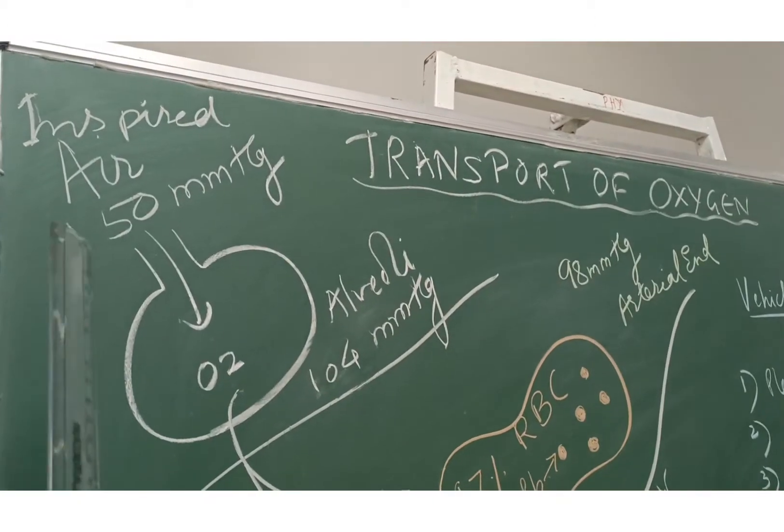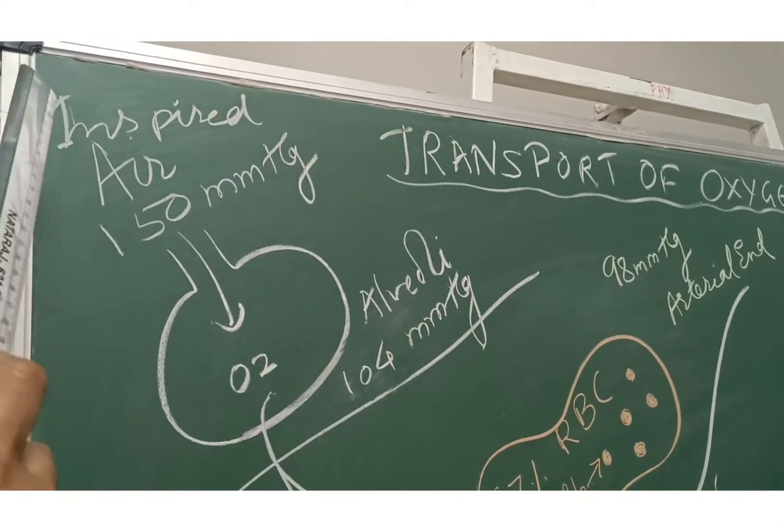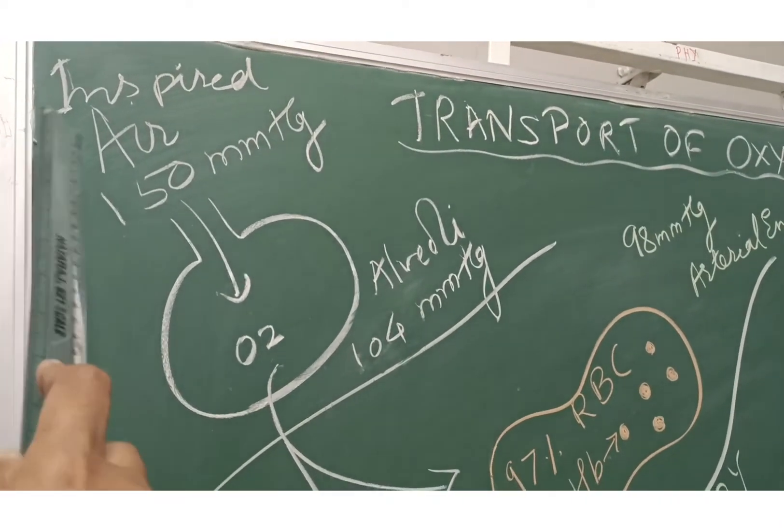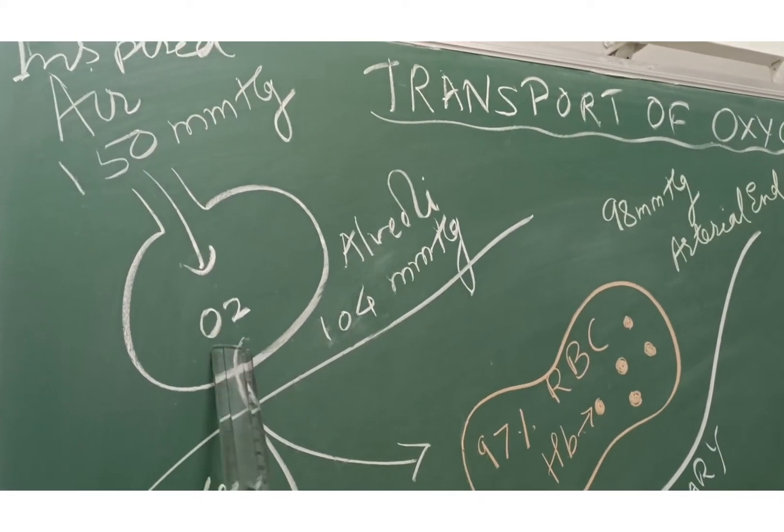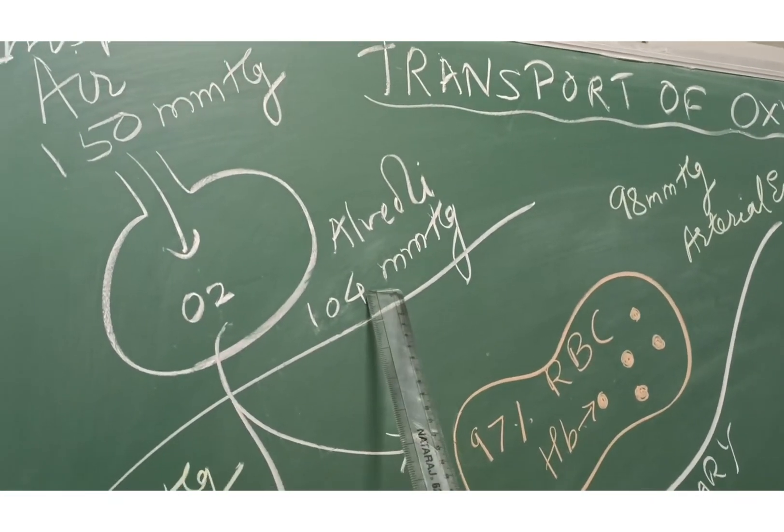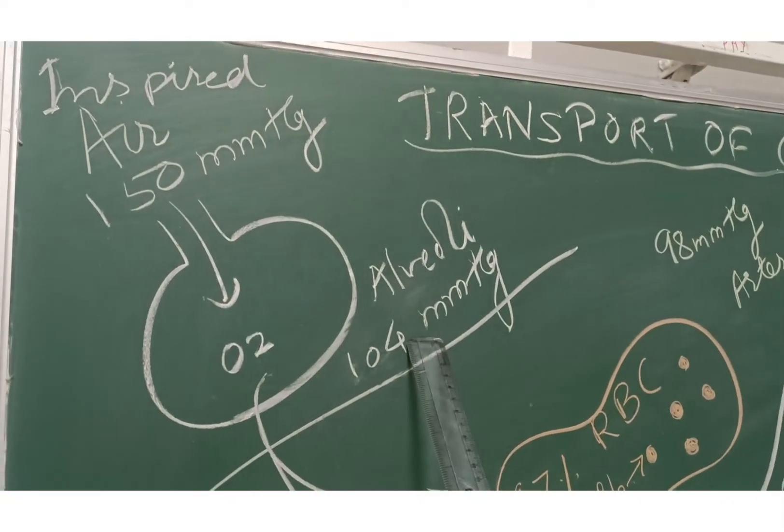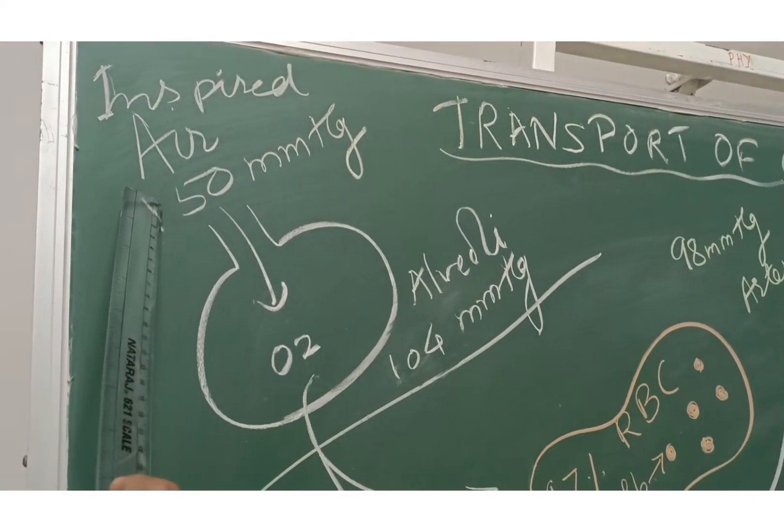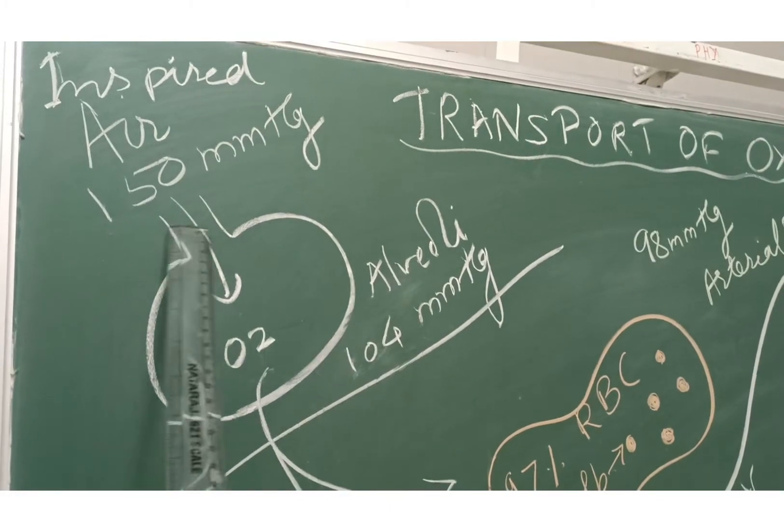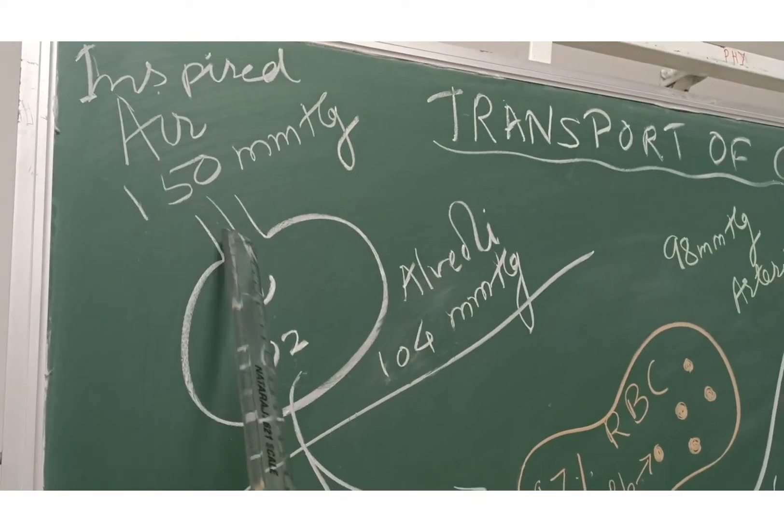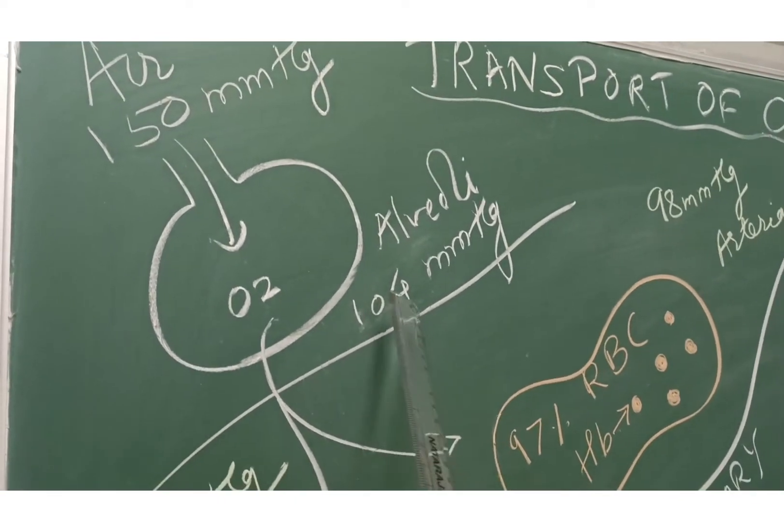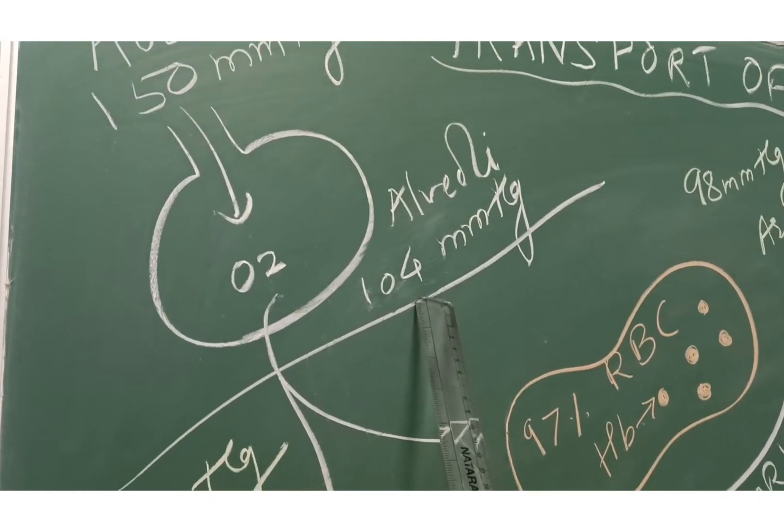As depicted in the diagram, you can see that in inspired air, the partial pressure of oxygen is 150 millimeters of mercury, and the alveolar pressure is 104 millimeters of mercury. We all know that there is transfer of gases from higher pressure to lower pressure, so oxygen will come from atmospheric air into the alveoli at 104 millimeters of mercury.